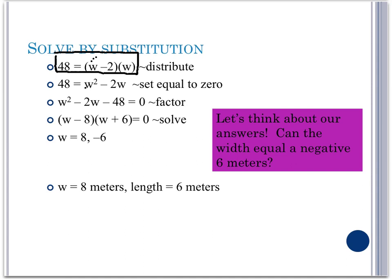which is equal to negative 2w. Our next step is, since it's a quadratic equation, we must set it equal to 0 by subtracting 48 from both sides. Therefore, we get the quadratic w squared minus 2w minus 48 is equal to 0.